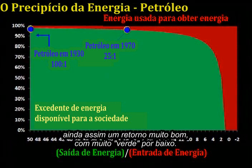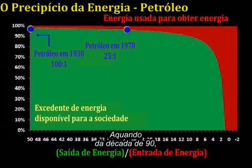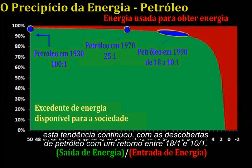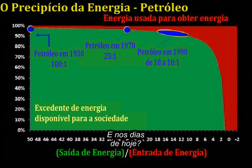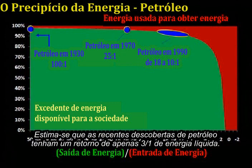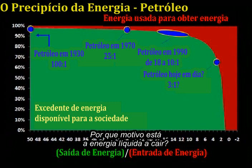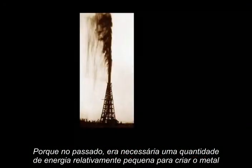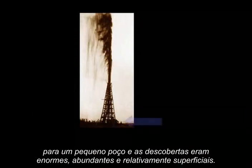Still, a very good return with lots of green beneath it. By the 1990s, this trend continued with oil finds returning somewhere between 18 and 10 to 1. And today, it is estimated that recent oil finds are returning only 3 to 1 net energy. Why is this net yield dropping? Because in the past, a relatively small amount of energy was required to create the metal for a smallish rig, and the finds were massive and plentiful and relatively shallow.